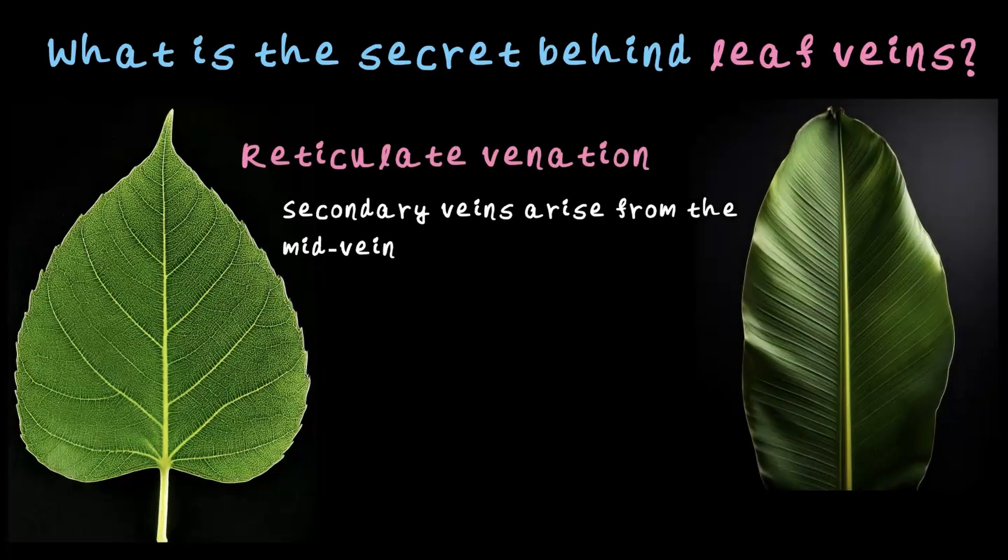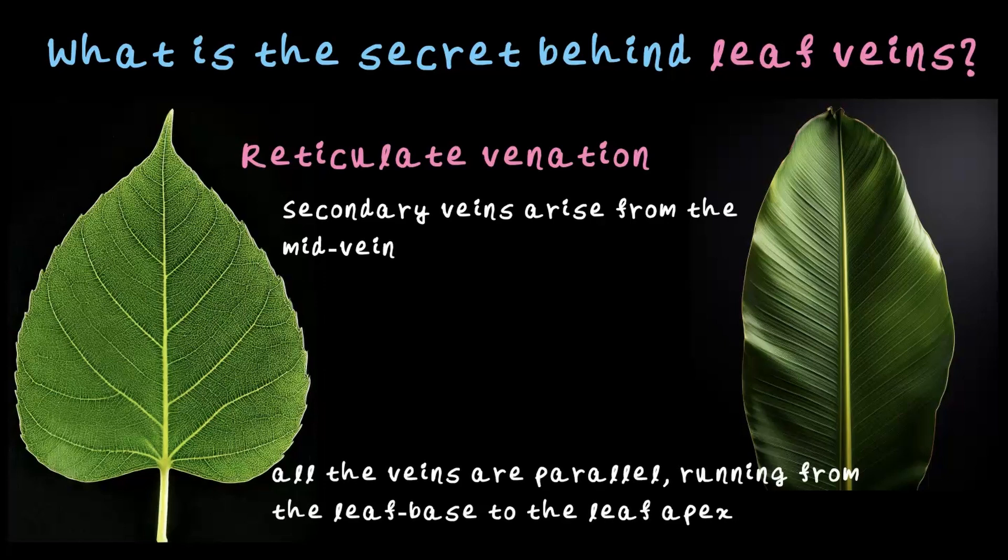Now check out this one. All the veins are running parallel to each other like neatly drawn lines. This type of vein pattern is called parallel venation. These are the two common types of leaf venation you will find in plants: reticulate and parallel.